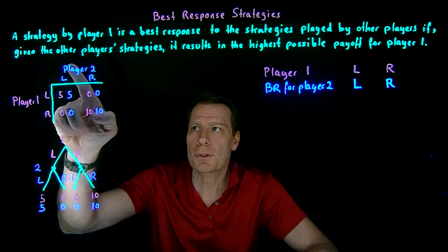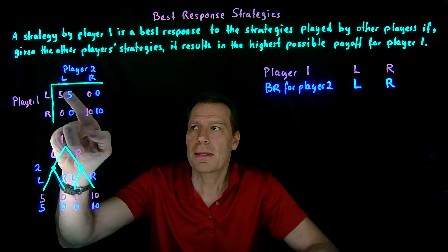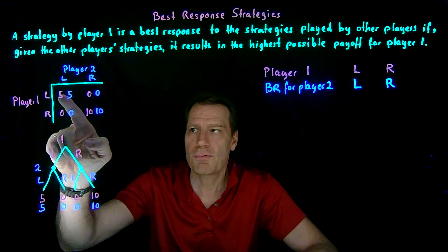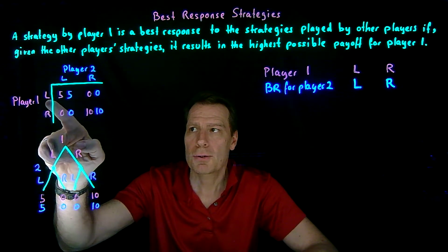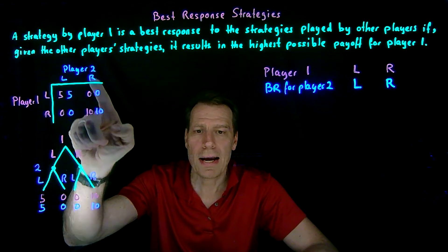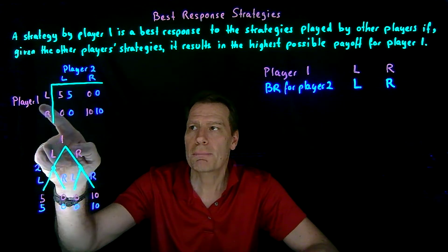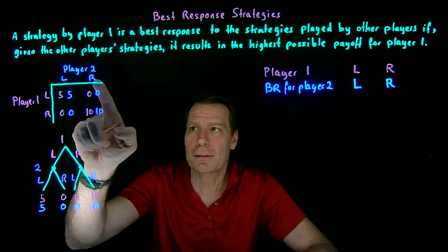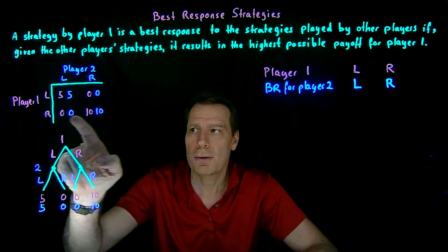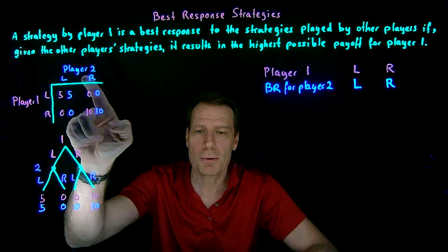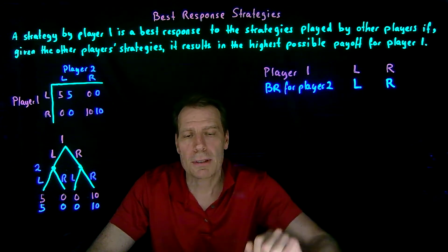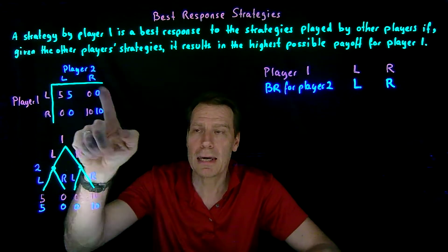If player 1 knows that player 2 is planning to play left, then player 1 knows he's going to end up in this column, choosing between 5 and 0 — so left is the best response to left. And if player 2 chooses right as her strategy, then player 1 is going to end up in this column, choosing between 0 and 10 — so right is the best response to player 2 playing right. The best responses are symmetric to each other because the game is symmetric.